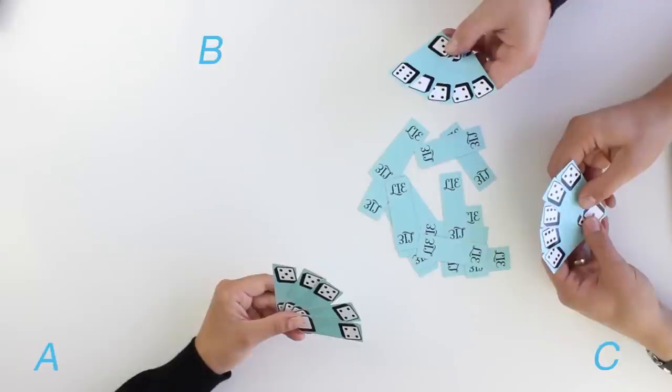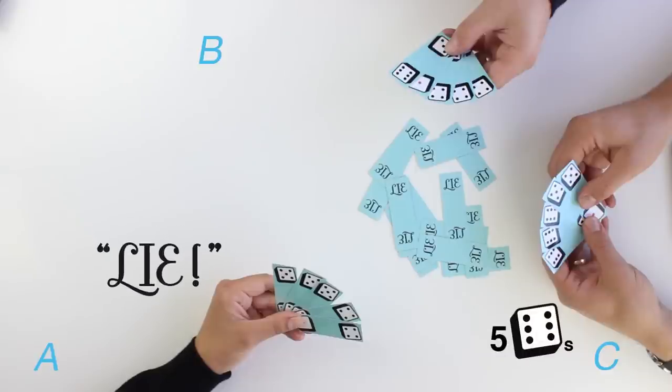Here are a few examples. Player A bids four fives. Player B bids four sixes. Player C bids five sixes. And Player A calls lie on Player C.